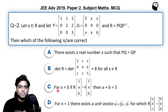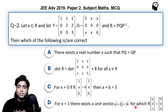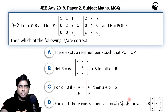Option C: for x = 0, if R times the column matrix [1, a, b] is equal to 6 times [1, a, b], then a + b = 5. Option D: for x = 1, there exists a unit vector αî + βĵ + γk̂ for which R times the column matrix [α, β, γ] equals the null matrix [0, 0, 0]. Let's see how we can solve these in an easier manner.